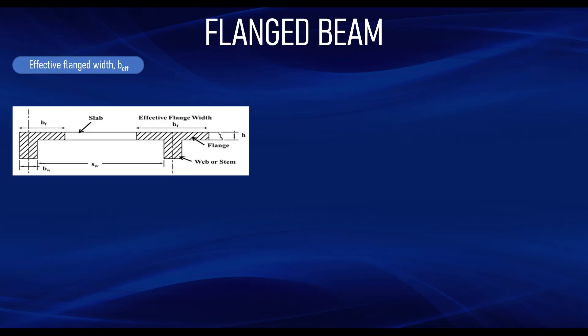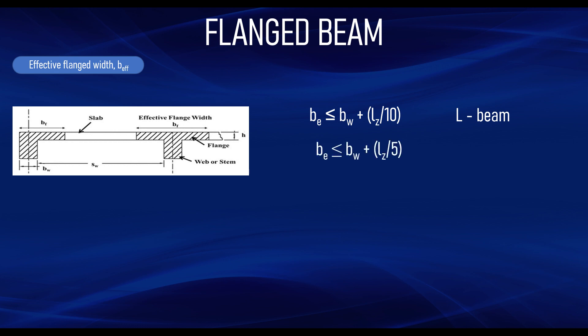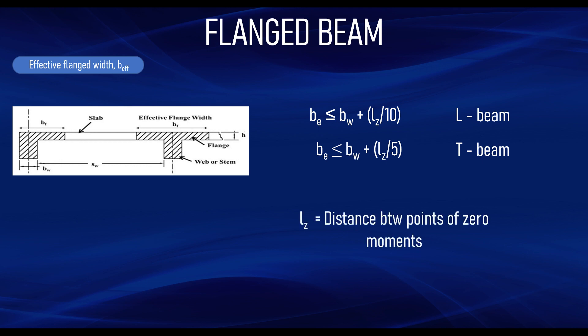To summarize: to determine the effective flange width of T and L beams based on BS-8110, the effective width must be the lesser of the actual flange width or bw plus lz over 10 for an L beam, and bw plus lz over 5 for a T beam. lz is the distance between points of zero moment as per clause 3.4.1.5 of BS-8110 Part 1.